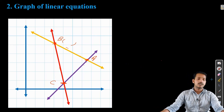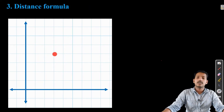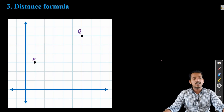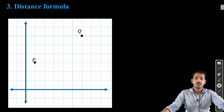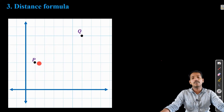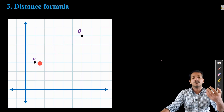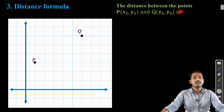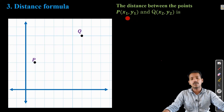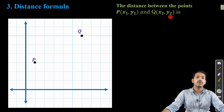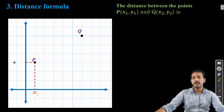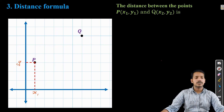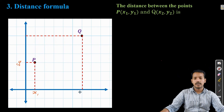Now let us directly get into the Distance Formula. Consider a Cartesian coordinate system with two points P and Q. We need to find the distance between these two points. We need a formula for finding the distance between two points if their coordinates are given — that is, the distance between point P(x₁, y₁) and Q(x₂, y₂). The coordinates of the first point are x₁ and y₁, and the second point are x₂ and y₂.